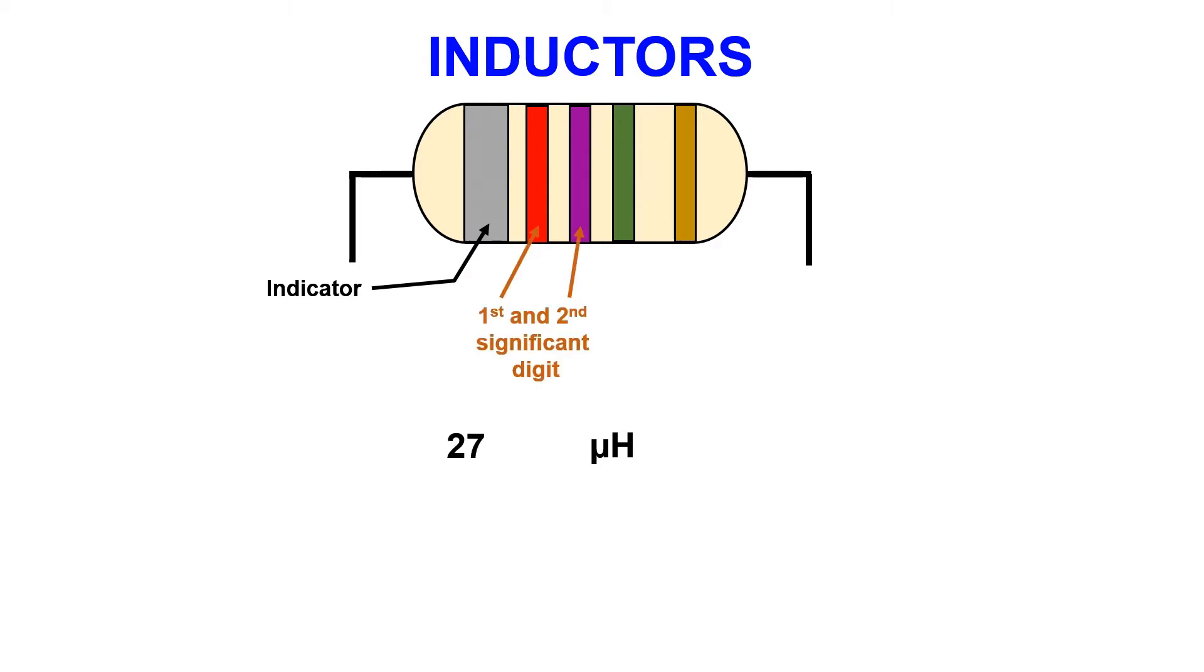The second and third bands are your significant digits. Band four is the amount of zeros and band five is your tolerance. When punching this into your calculator it will always be followed by micro before hitting equals.